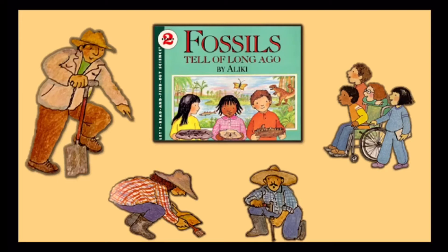These are dinosaur tracks. They were made in fresh mud 115 million years ago. Sand filled the dinosaur's footprints in the mud. It's an iguanodon. The sand hardened into a rock called sandstone. Millions of years later fossil hunters dug through the rock. They found fossil tracks — exact imprints of the dinosaur's foot. These footprints tell us a lot about iguanodon.